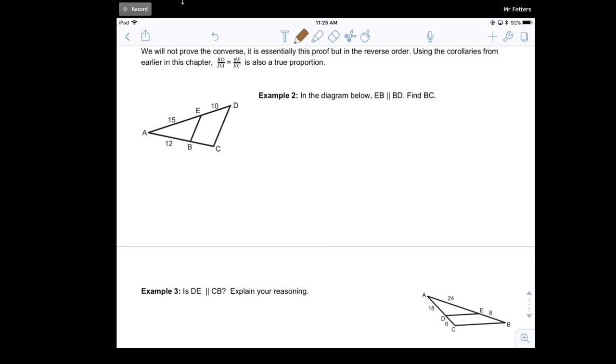So if I do this, I know the ratio of 10 over 15 will be equal to BC over 12.